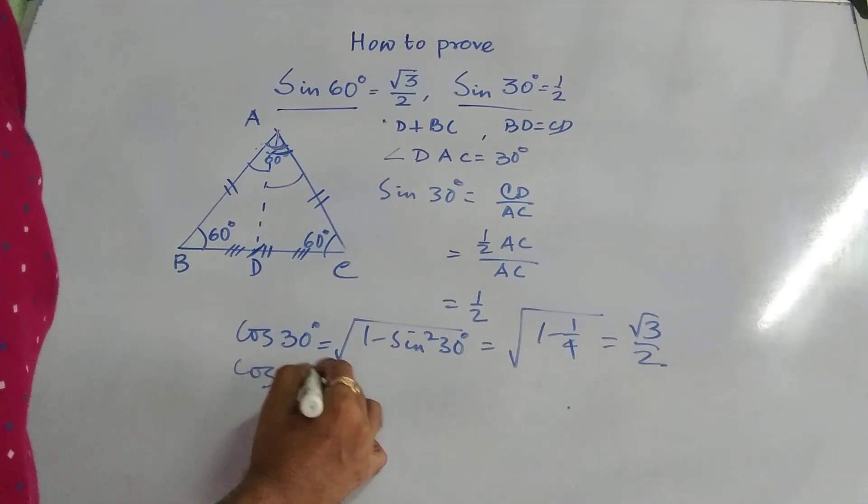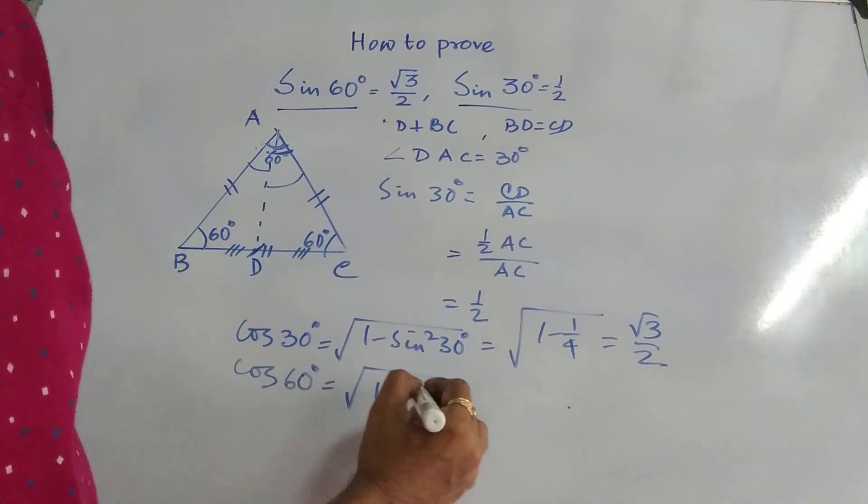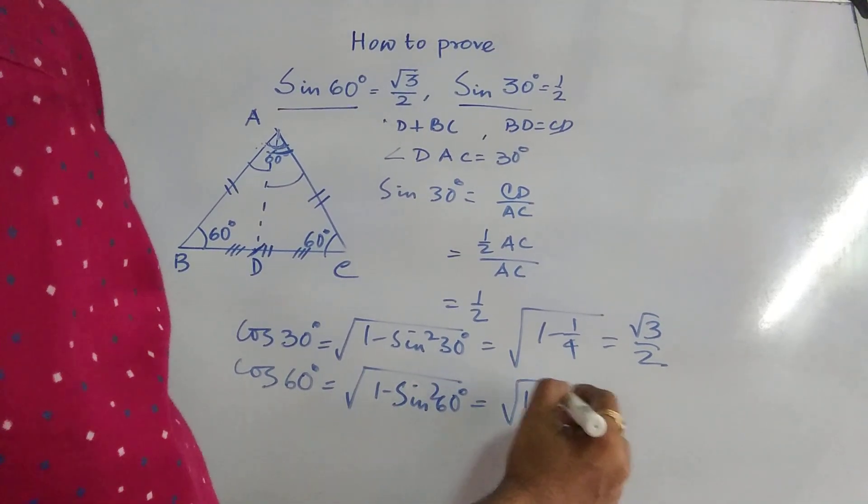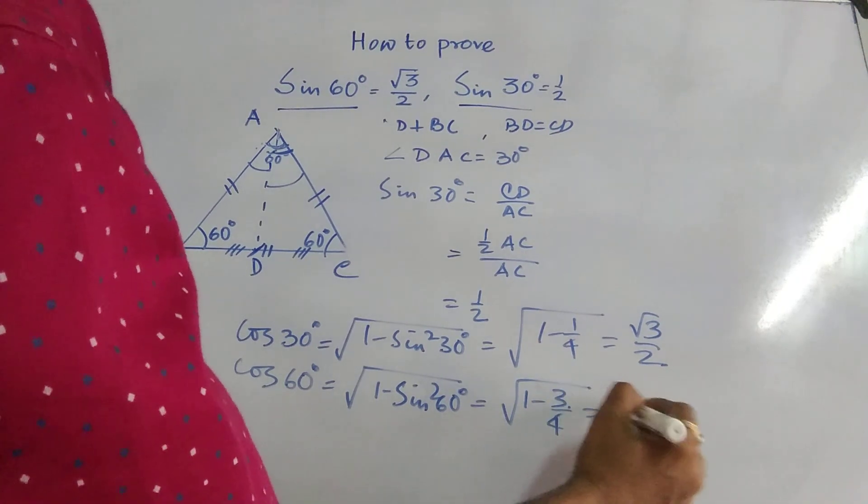And similarly, we can find out cos 60 degree equal to root over 1 minus, it will be 1 minus sin square 60 degree, that is root over 1 minus 3 by 4 equal to half.